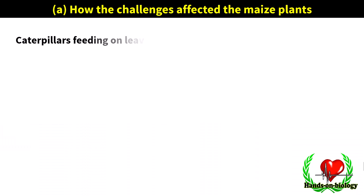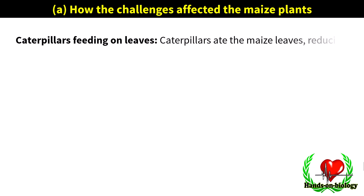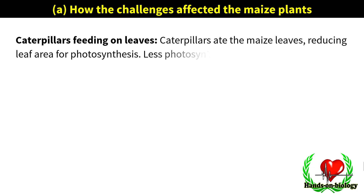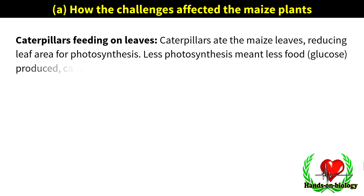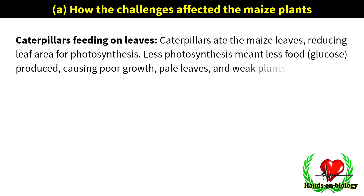Caterpillars feeding on leaves: caterpillars ate the maize leaves, reducing leaf area for photosynthesis. Less photosynthesis meant less glucose produced, causing poor growth, pale leaves, and weak plants.